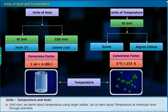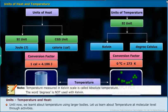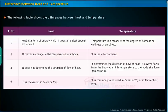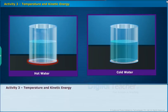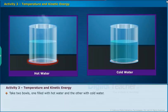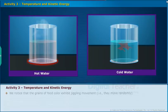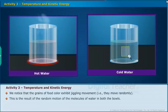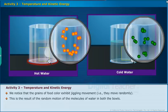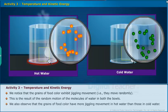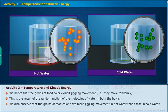Until now we learned about temperature using larger bodies. Let us now learn about temperature at the molecular level through activities. Take two bowls — one filled with hot water and the other with cold water. Gently sprinkle some food color in both bowls and observe the motion of small grains of food color. We notice that the grains of food color exhibit jiggling movement — that is, they move randomly. This is the result of the random motion of the molecules of water. We also observe that the grains of food color have more jiggling movement in hot water than in cold water.